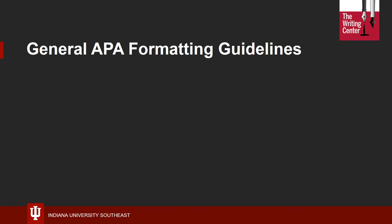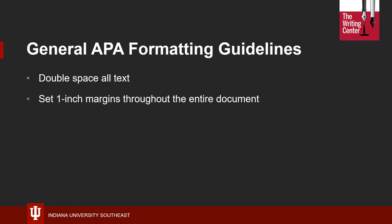Like most documentation styles used at universities, APA requires that all text be double-spaced, including on the cover page and the references page. In addition, you should avoid extra spaces — only press the enter or return key once each time. You should also use one-inch margins throughout, which is the standard in both Microsoft Word and Google Docs.